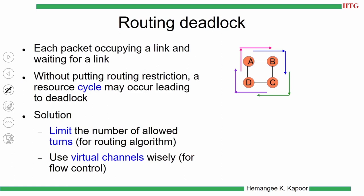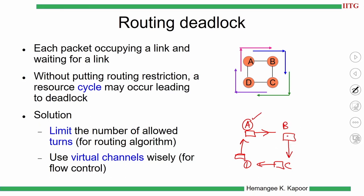Now let us look at the concept of deadlock. If we have nodes A, B, C, D each holding a buffer and wanting to send into the next node's buffer — A wants to send to B's buffer, B holds a buffer wanting to send to C, and so on — each is waiting for the other to release space. This cyclic dependency leads to deadlock.